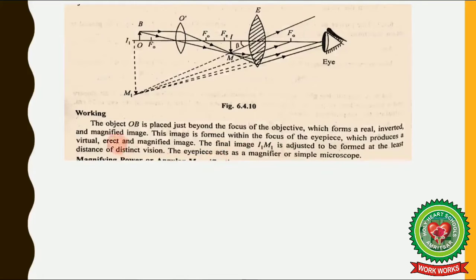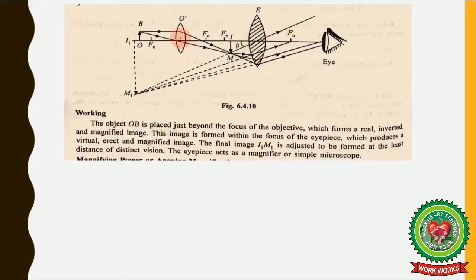Now let's see the working. This is the ray diagram of a compound microscope. Object OB is placed just beyond the focus of the objective. F₀ is the focal length of the objective lens. The object OB placed just beyond the focus of the objective forms a real, inverted, and magnified image — this image is formed by the objective lens.